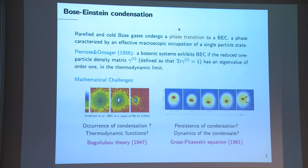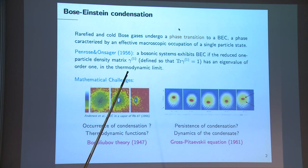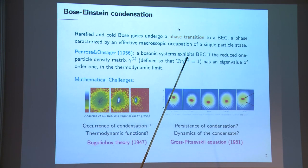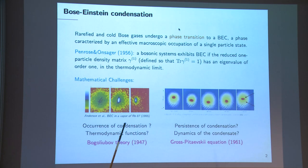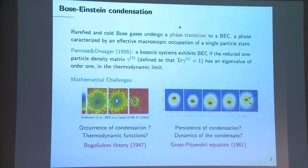This concept is made mathematically precise through the one-particle reduced density matrix, gamma 1. Using a normalization of gamma 1 equal to 1, we say that the system exhibits Bose-Einstein condensation whenever gamma 1 has an eigenvalue of order 1, and the corresponding eigenfunction is then the condensate wave function.